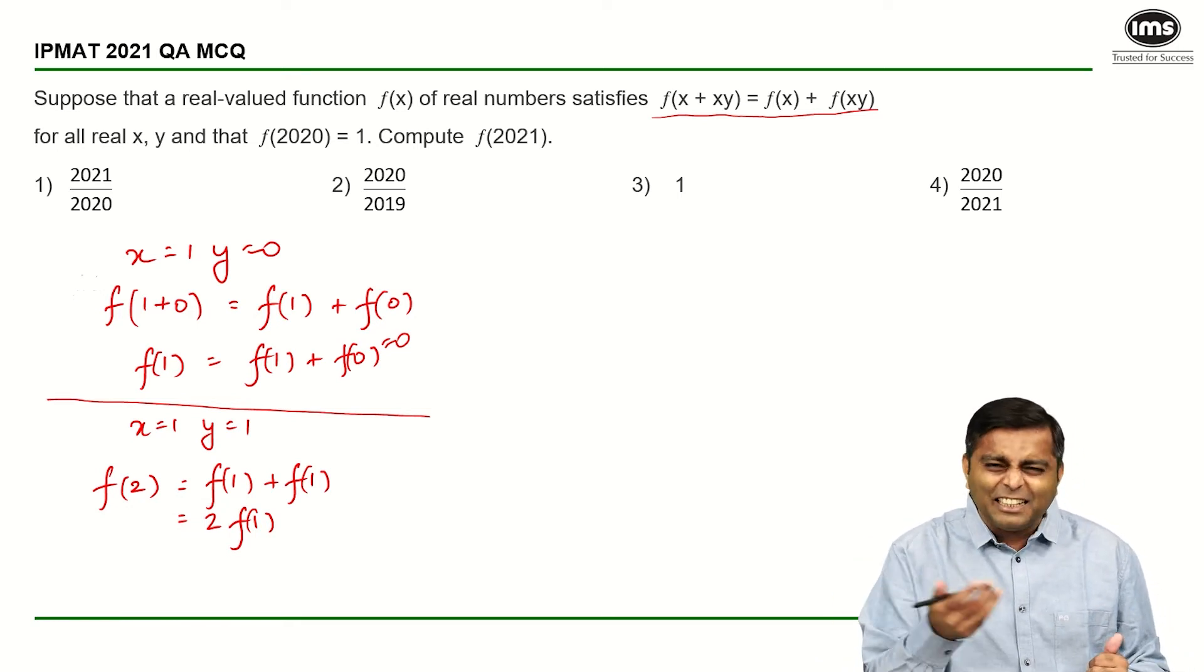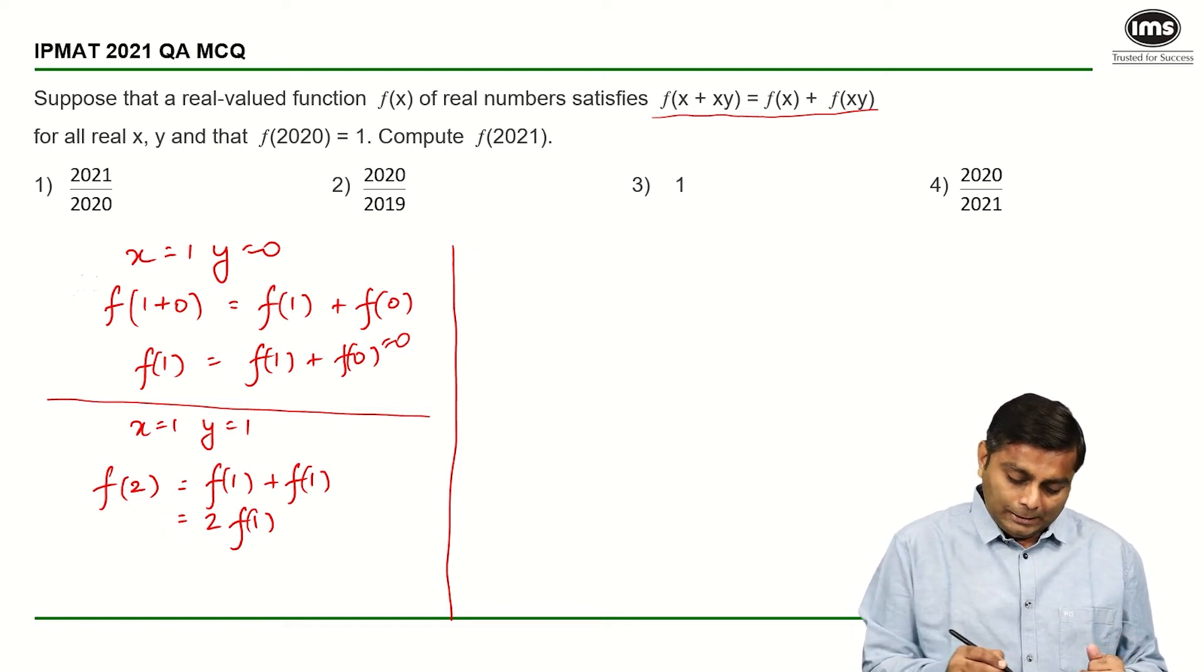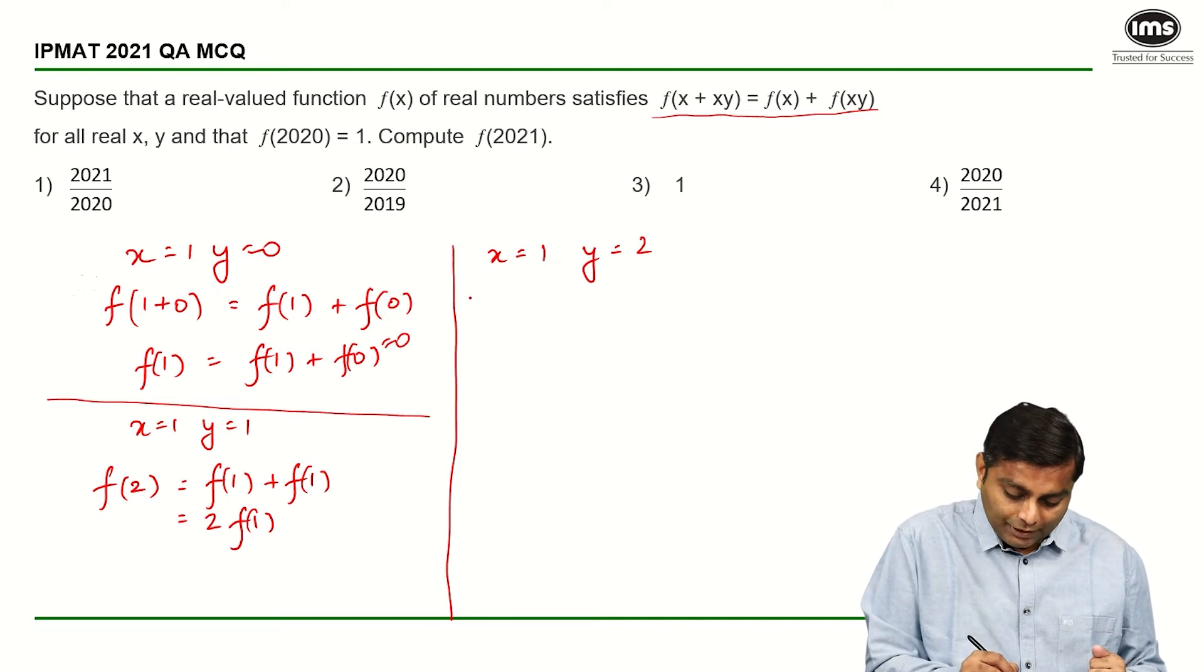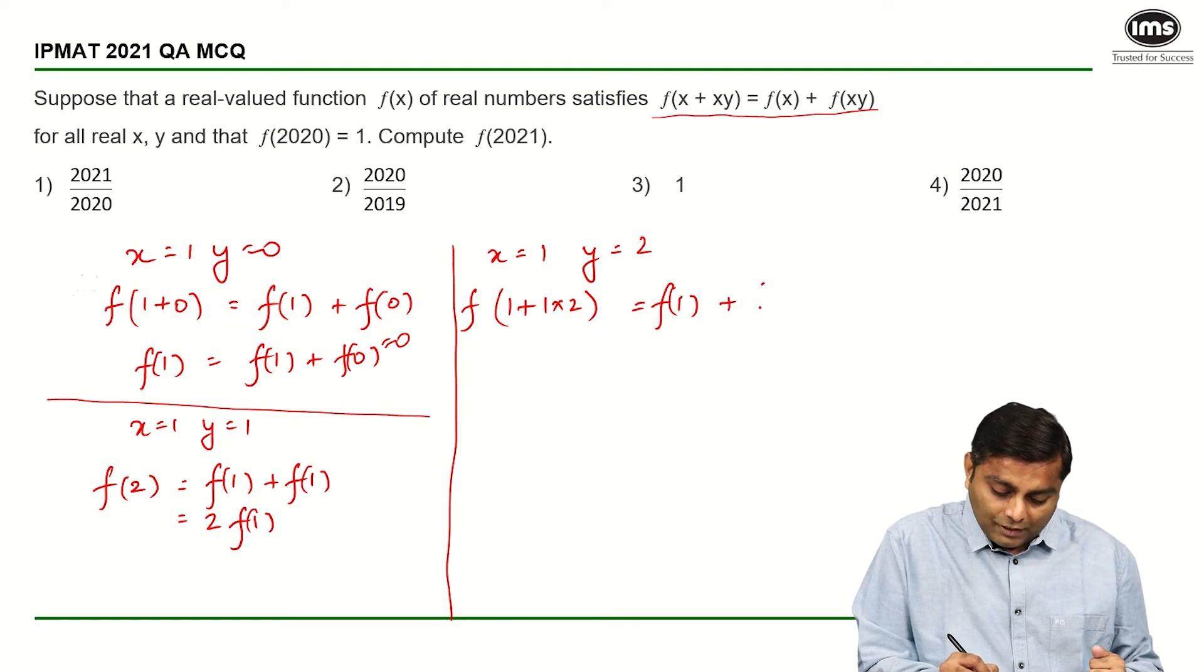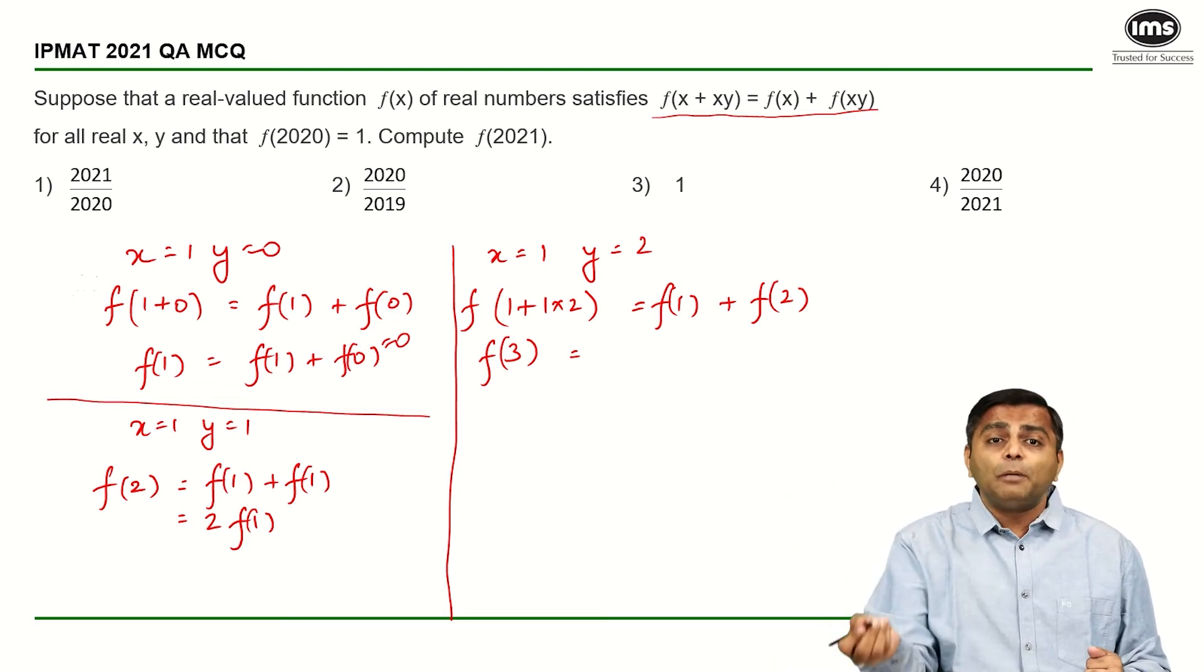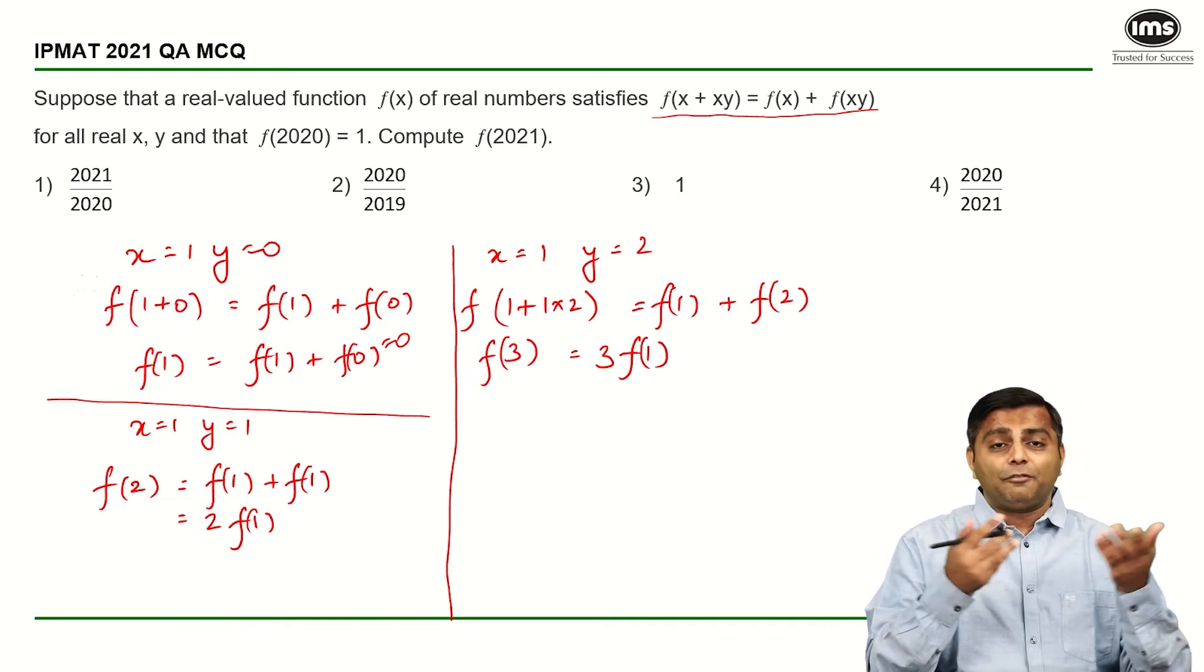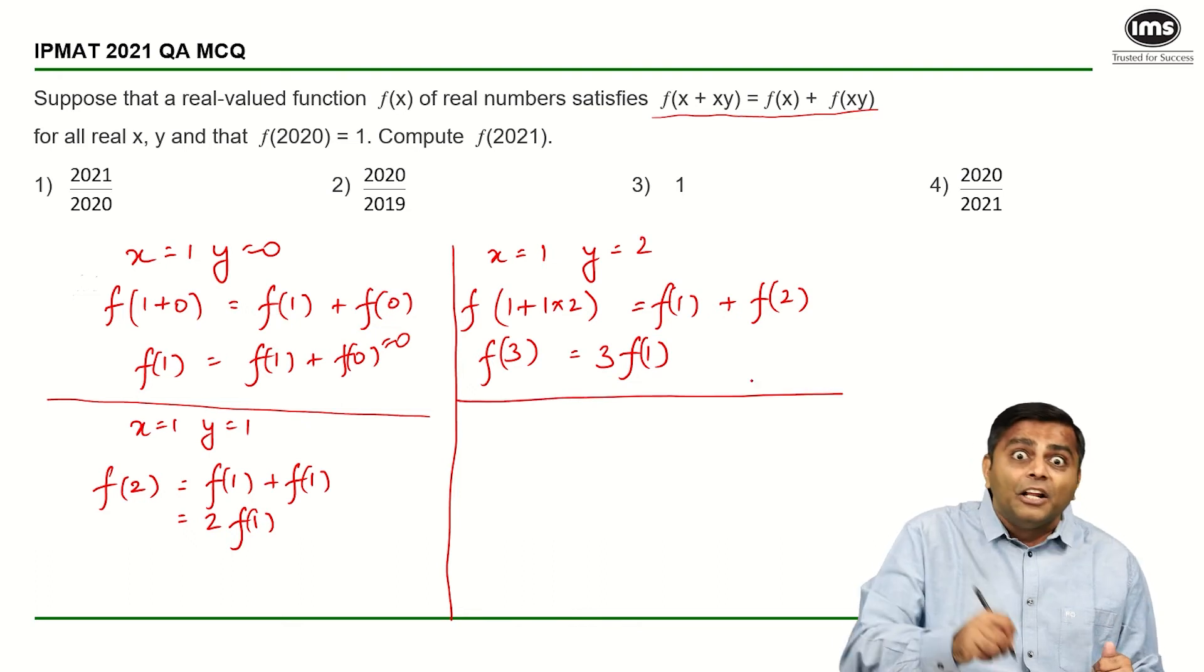Let us see if we are able to get f(3) in a similar fashion. If we want to go to f(3), let us say we put x = 1 and y = 2. This is f(1+1·2) = f(1) + f(1·2), which is f(2). On the left hand side, we have f(3) = f(1) + f(2). We know f(2) is 2 times f(1), so 2 times f(1) + f(1) is 3 times f(1). Yes, indeed, this is what we wanted. So f(3) is 3 times f(1), f(2) was 2f(1), f(3) is 3 times f(1).